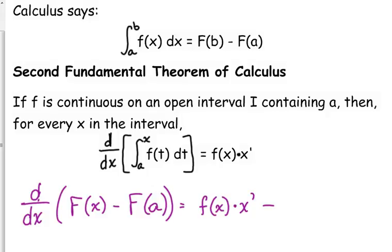Minus big F of a. A is a constant. You plug the constant into a function, you get an answer. The derivative of a constant is zero. So this is why the second fundamental theorem works the way that it works.